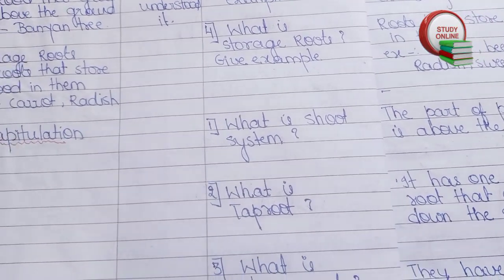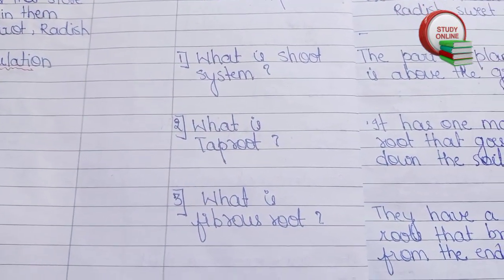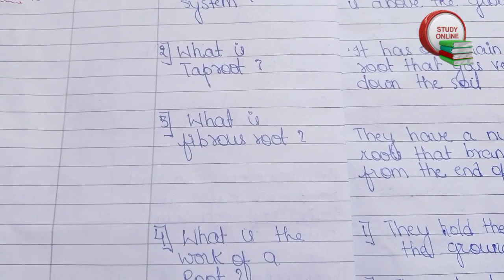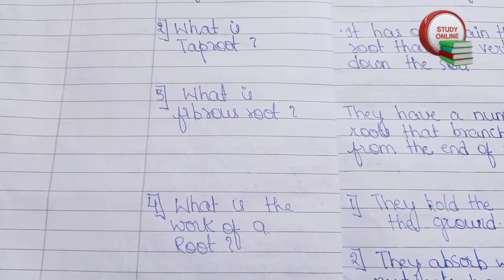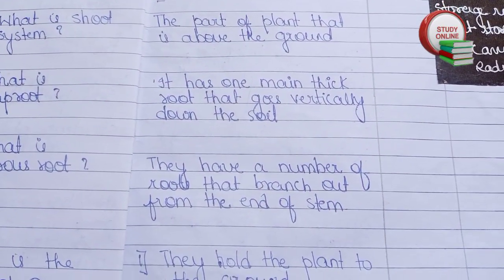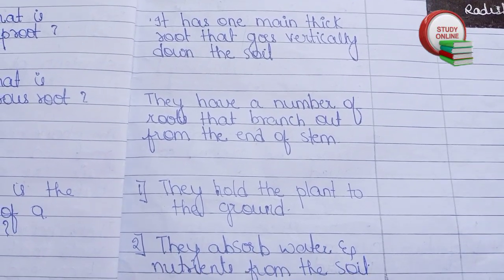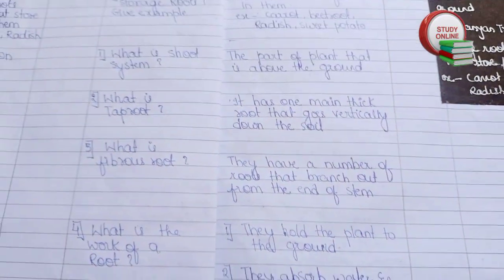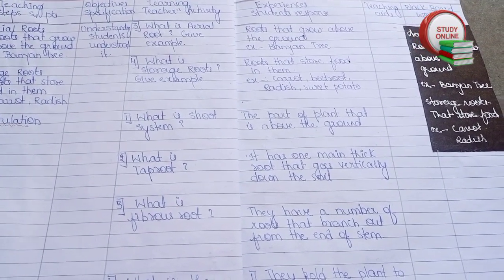For recapitulation, we can ask about five questions — that is enough. Questions like: 'What is shoot system?', 'What is tap root?', 'What is fibrous root?', 'What is the work of root?' We ask these to students, and here you can see the answers we expect from students. This is the overall look of recapitulation and Presentation 2.